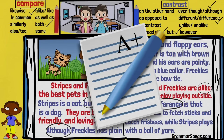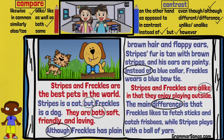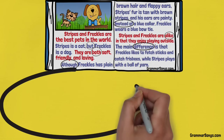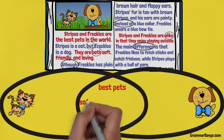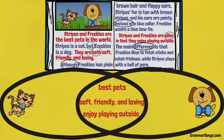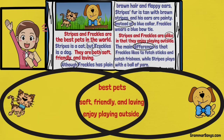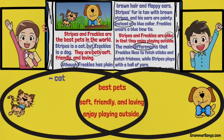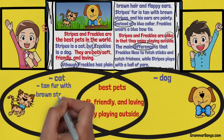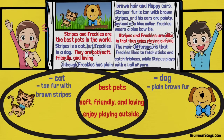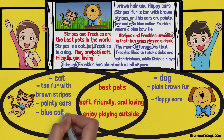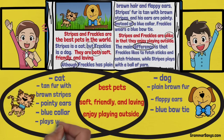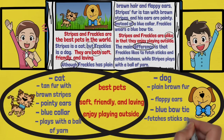Now it will be easy to use a Venn diagram to organize the ideas we read about Stripes and Freckles. Comparing how they are alike: they are both the best pets, they are soft, friendly, and loving, and they both enjoy playing outside. Contrasting how they are different: Stripes is a cat but Freckles is a dog; Stripes has tan fur with brown stripes but Freckles has plain brown fur; Stripes has pointy ears but Freckles has floppy ears; Stripes wears a blue collar but Freckles wears a blue bow tie; and Stripes plays with a ball of yarn while Freckles fetches sticks and catches frisbees.